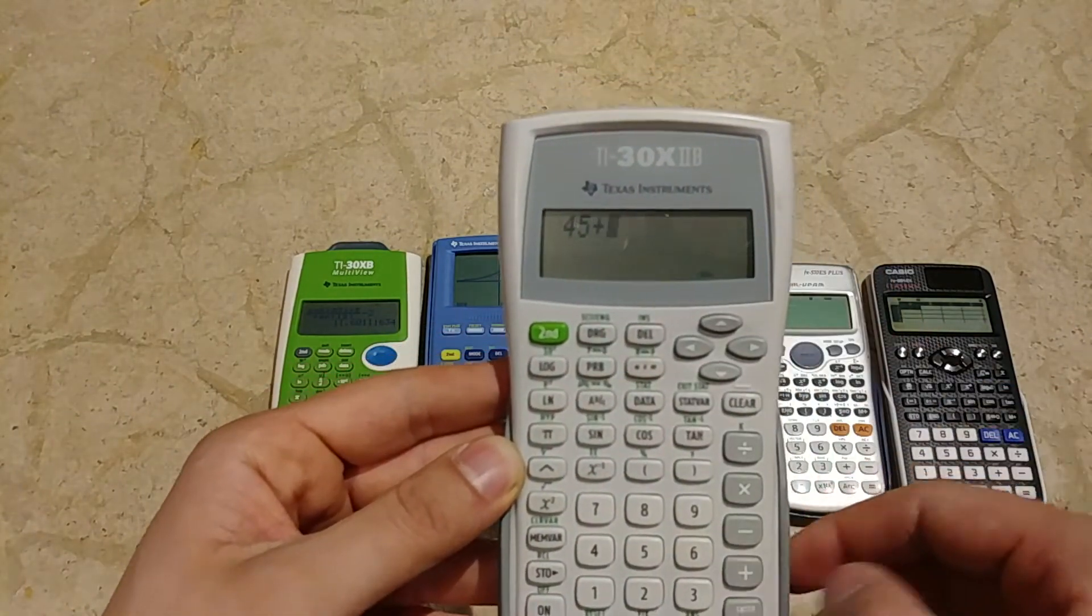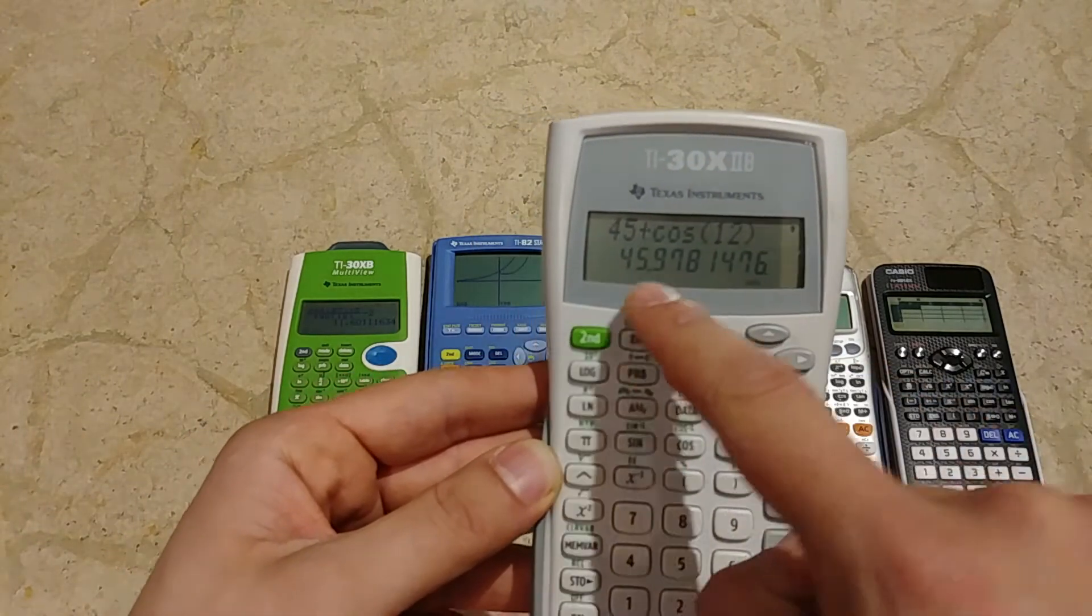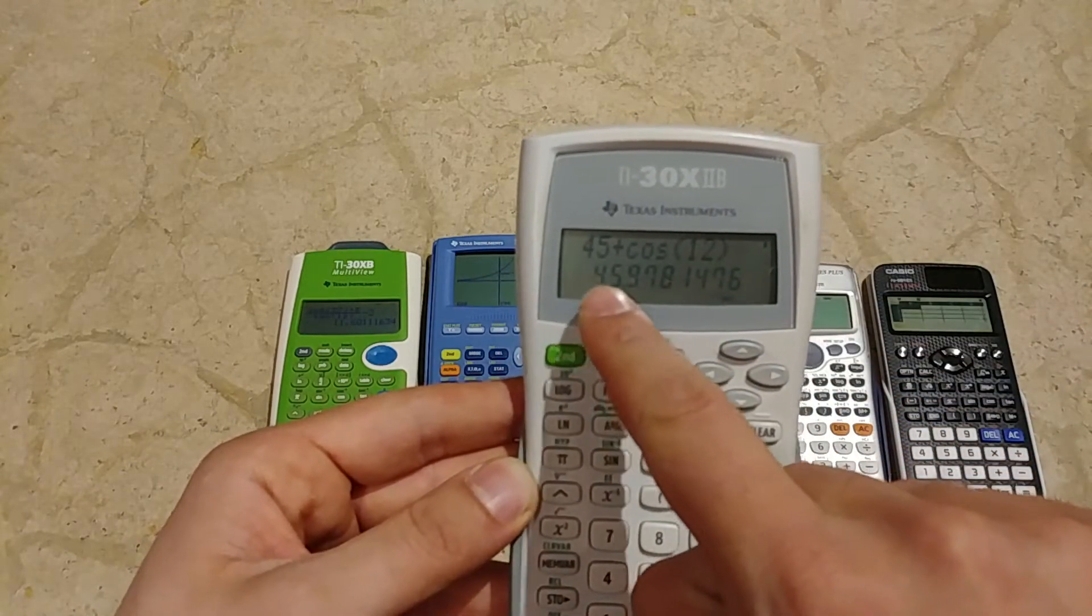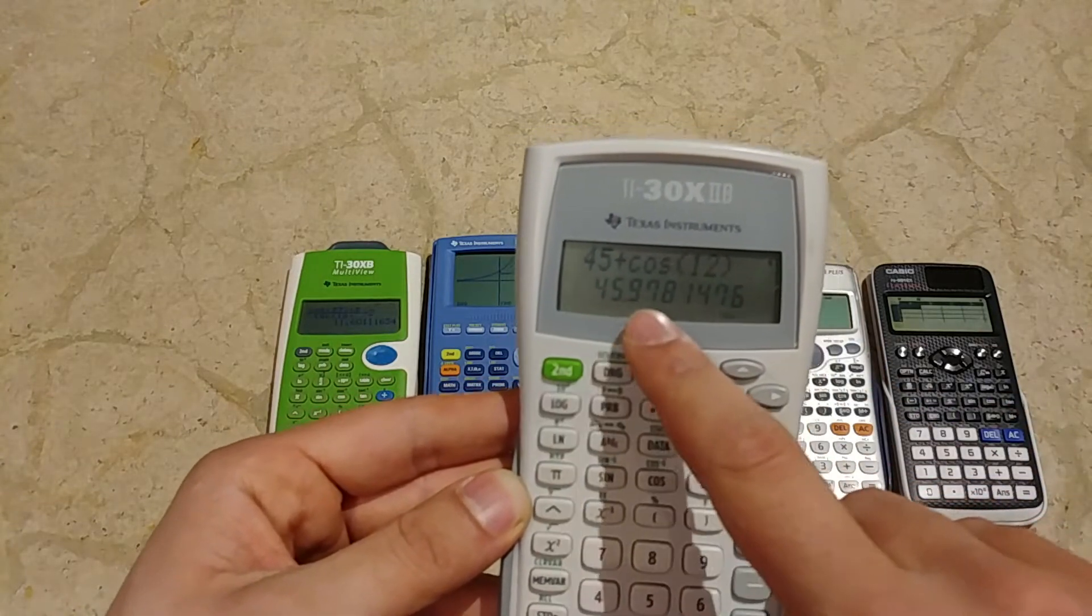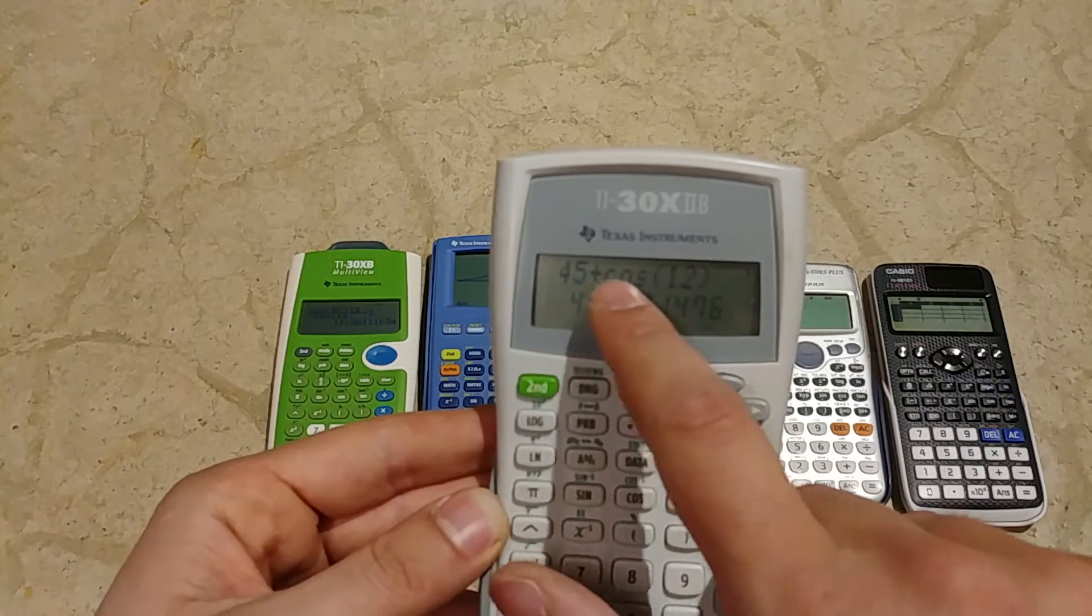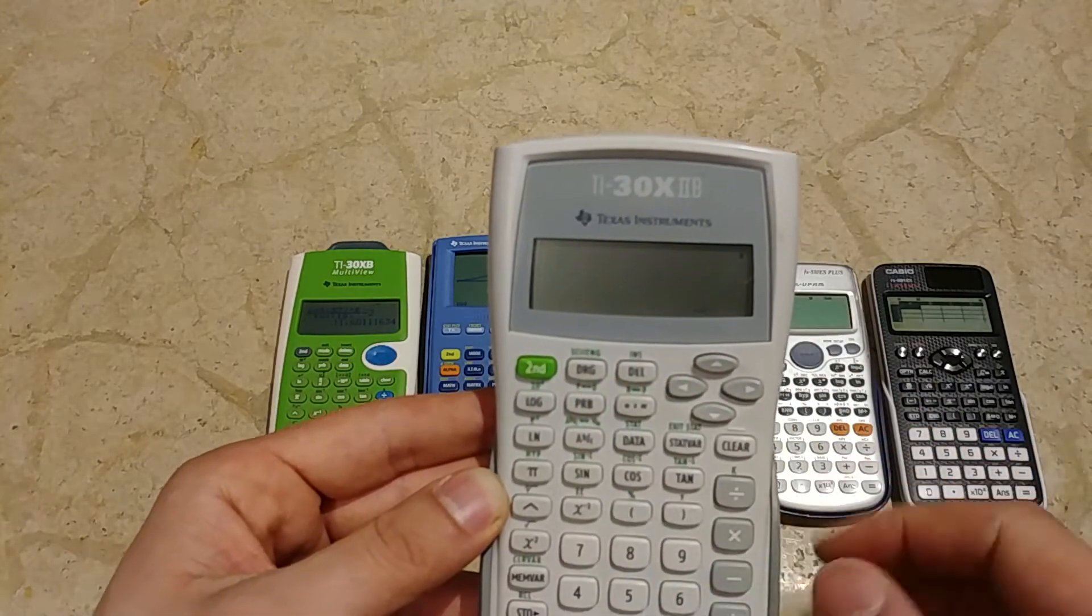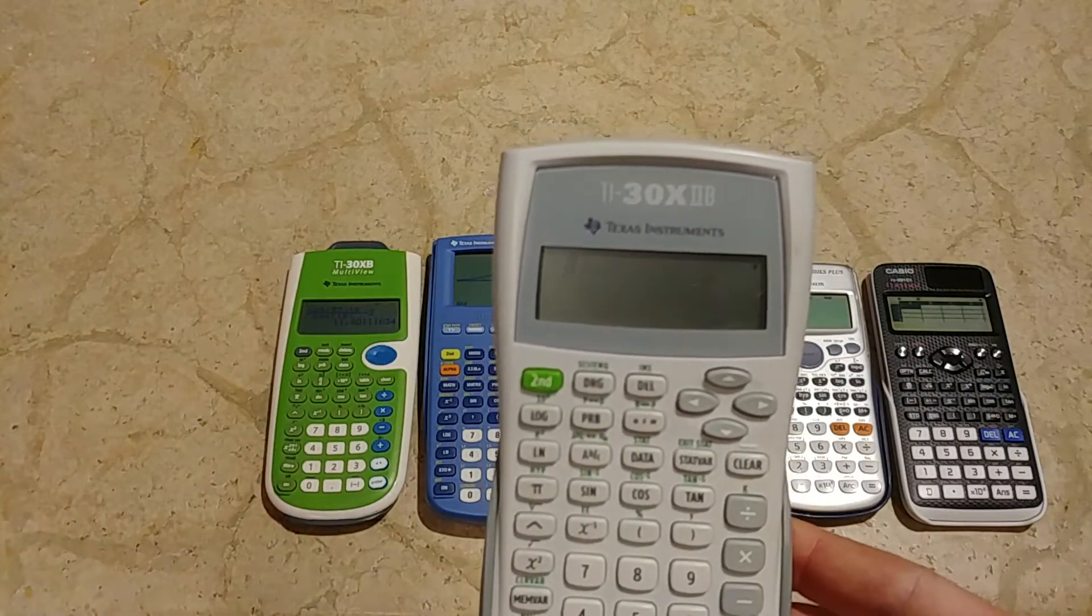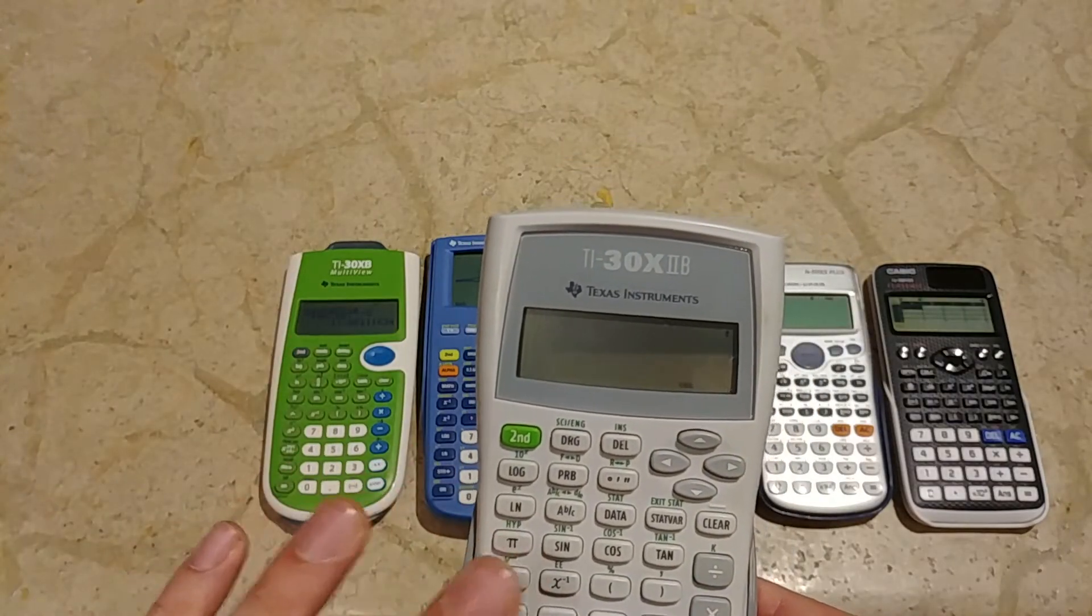The TI-30X2B has a pixel display, while the other one has a non-pixel display that can only show numbers, like an elevator display. This one can show letters and everything you want to put inside. It's my first calculator and I lost it one time on the bus, but I immediately bought another identical one because for my secondary school it was so useful.